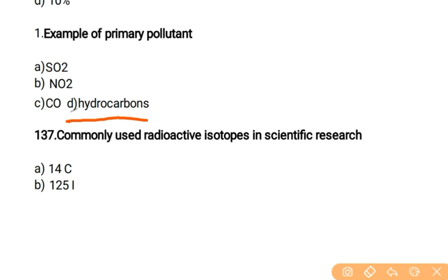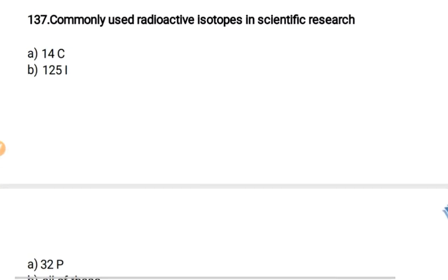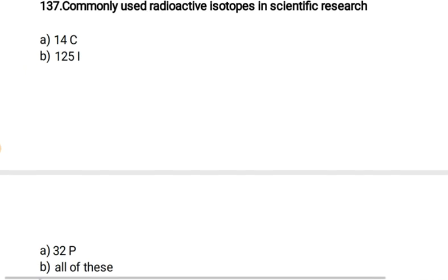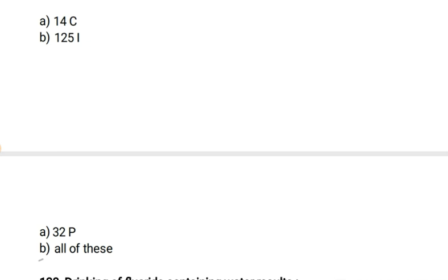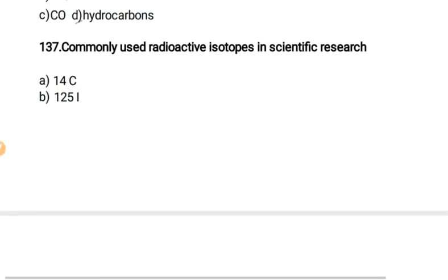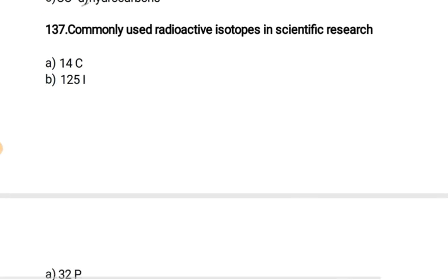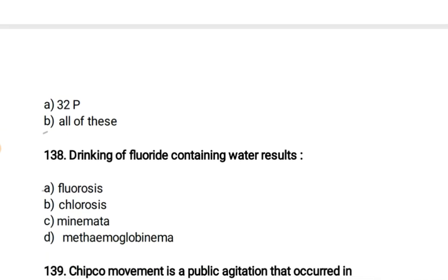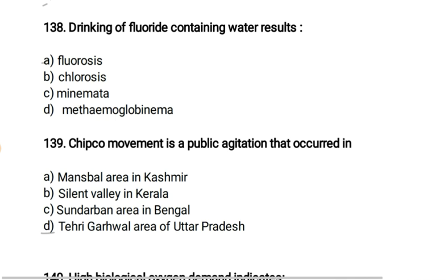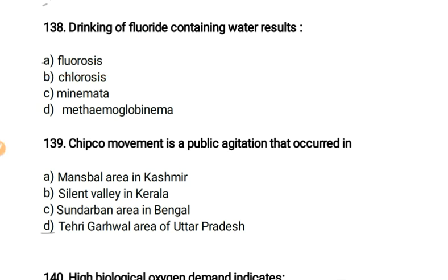Commonly used radioactive isotopes in scientific research are C-14 (carbon-14), I-125 (iodine-125), and P-32 (phosphorus-32) — all of these are used as research materials. Drinking fluoride-containing water results in fluorosis.